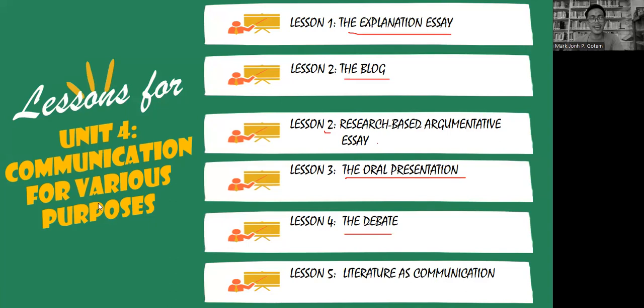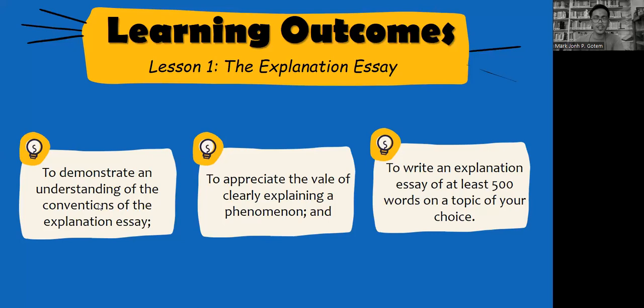And the last discussion, which is lesson six, is about literature as communication. So let's start with our learning outcomes in lesson one, the explanation essay. Our expected outcome is that you will write an explanation essay.